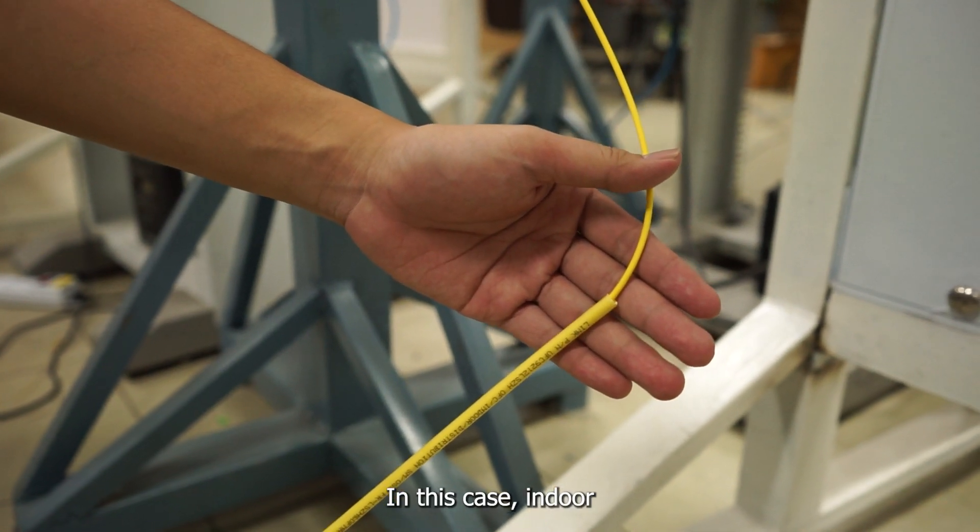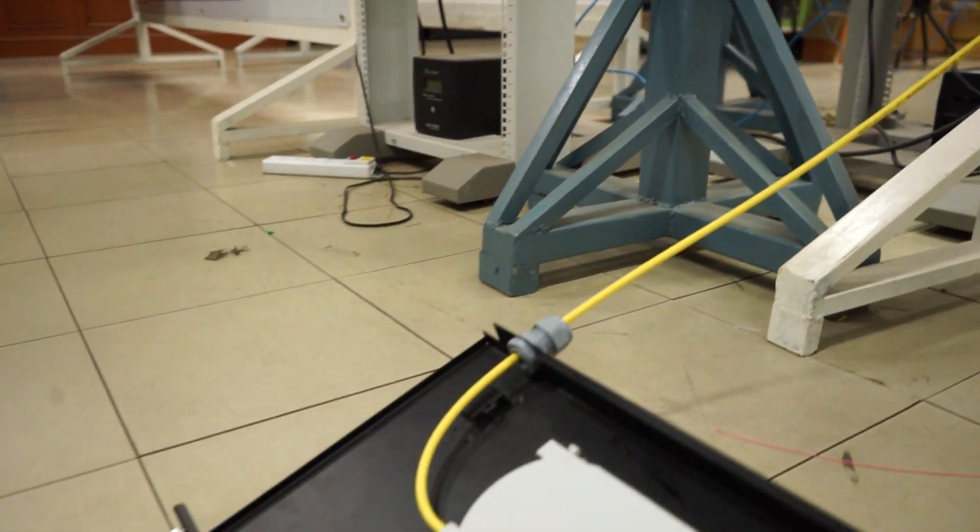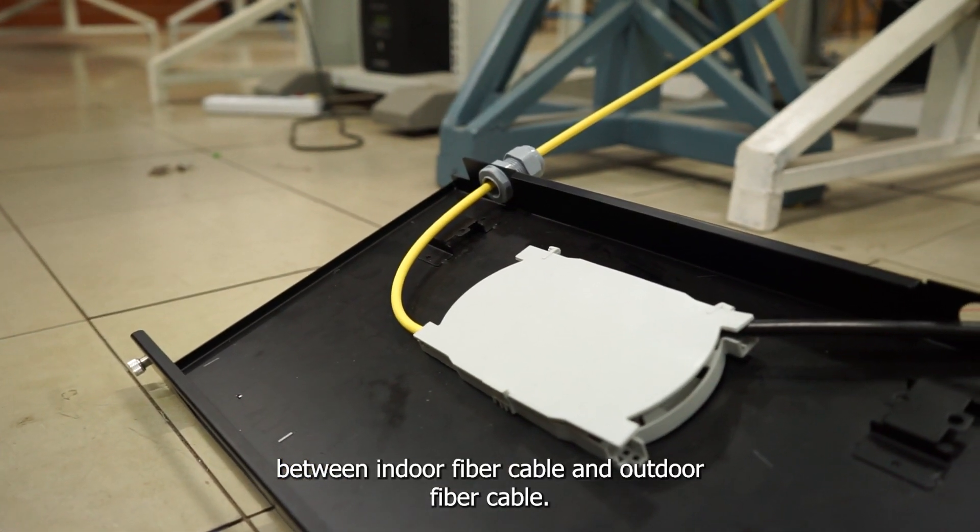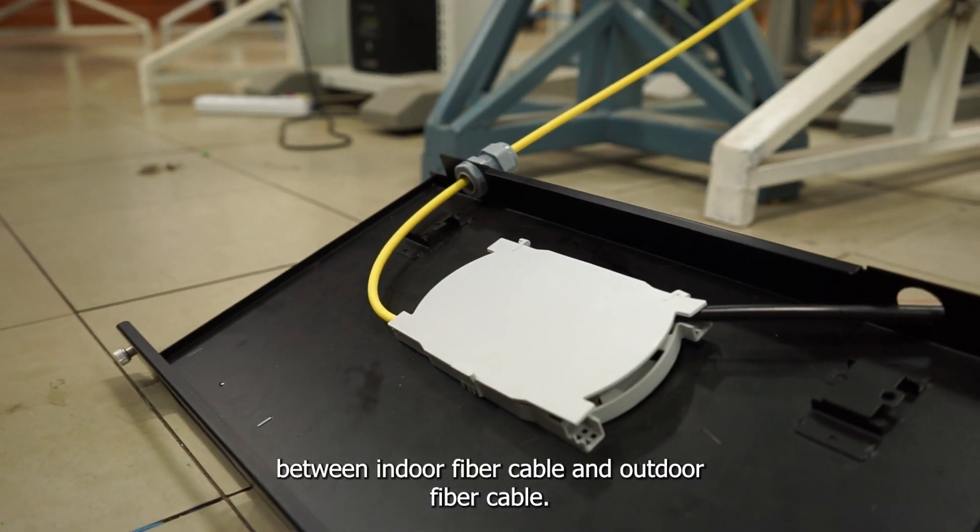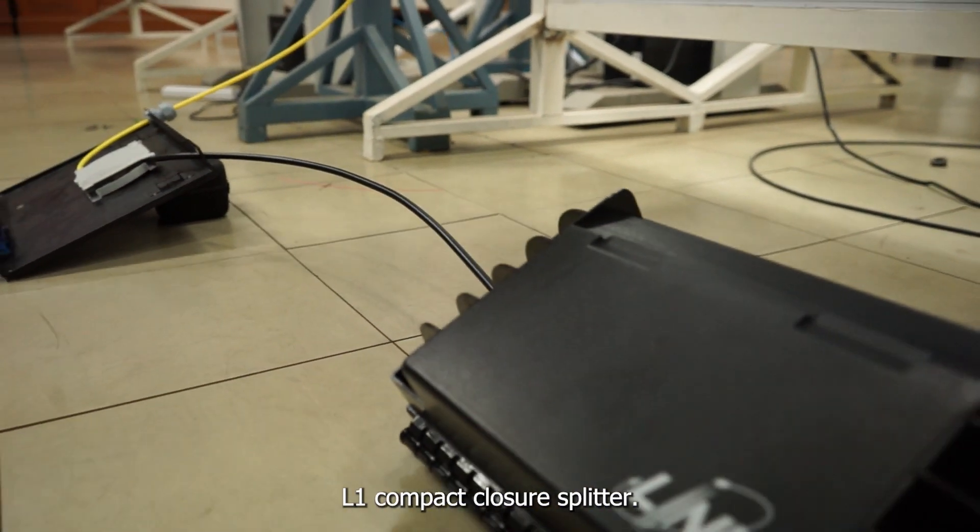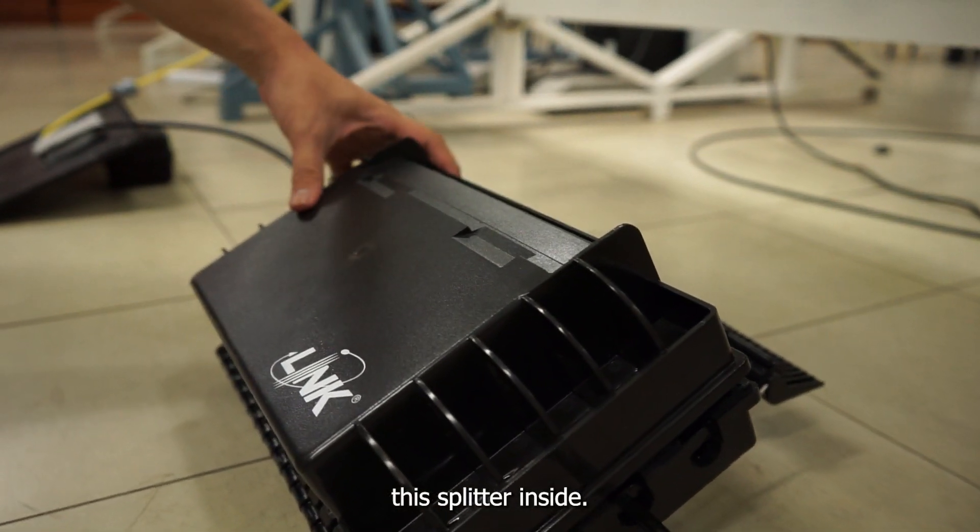The indoor fiber cable connects and goes into the closure. This closure connects the indoor and outdoor fiber cables. The outdoor fiber cable then goes to the L1 compact closure splitter.